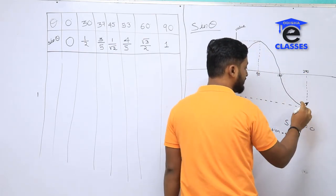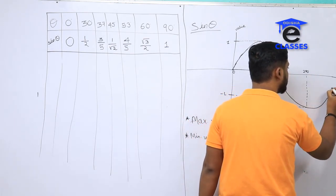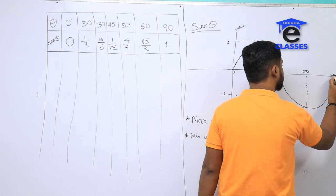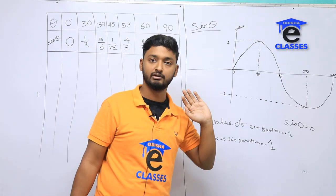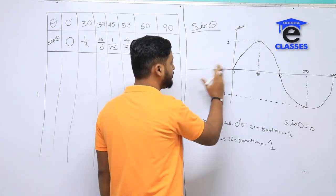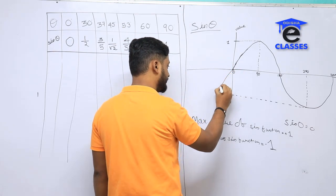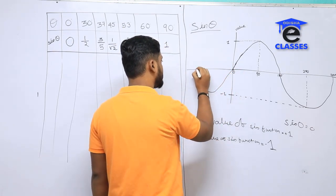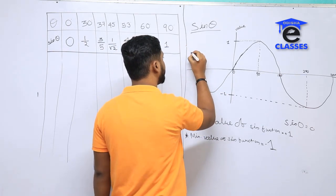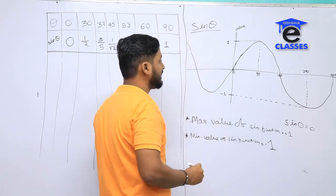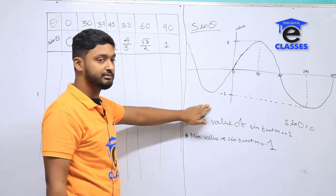At 270 degrees we reach the 4th coordinate, which is 0. At 360 degrees the value returns to 0. The graph goes into negative values — from plus 1 down to minus 1. This is the sine graph.